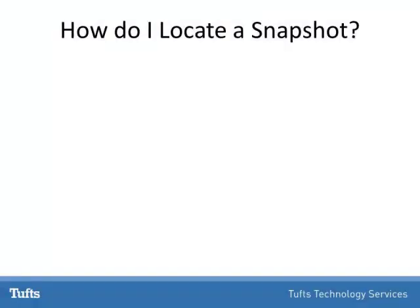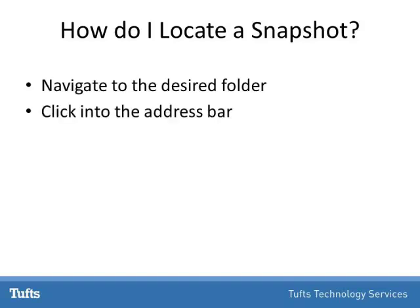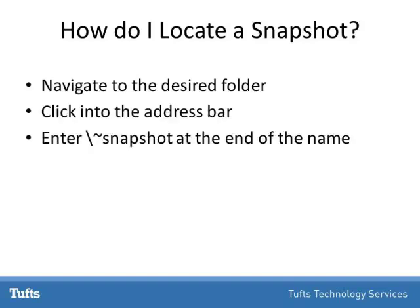To locate a file or folder that was saved in the Snapshot file, first navigate to the folder that recently held your file or folder. Click into the address bar and enter slash tilde snapshot at the end of the name. You can get the tilde symbol by pressing your shift key and the key above your tab key.